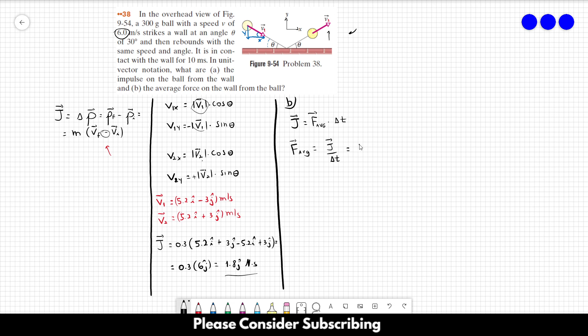So we just have to apply the negative sign over here and divide it by delta t, which is 10 times 10 to the minus 3, and this gives us minus 180j in the j direction newtons. So that's the answer of letter B.